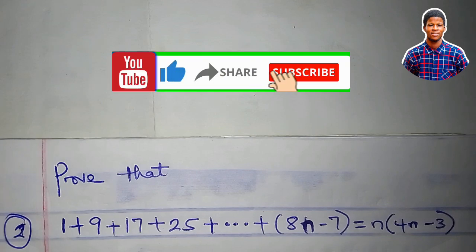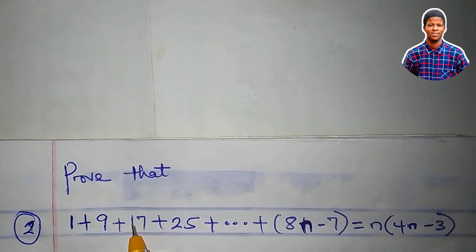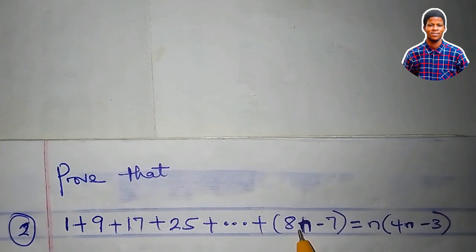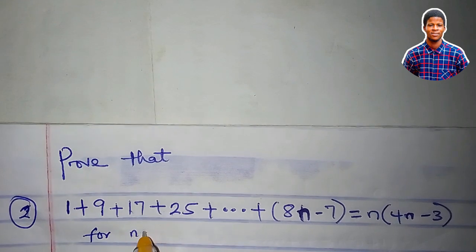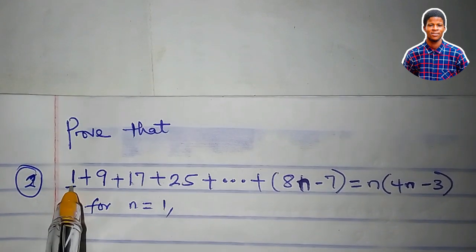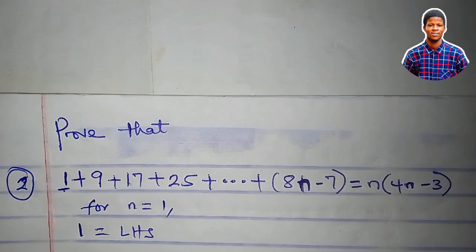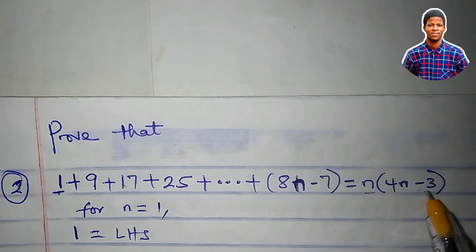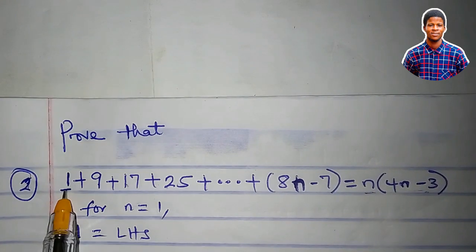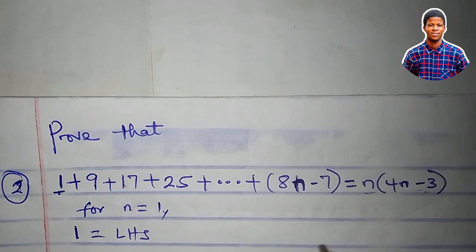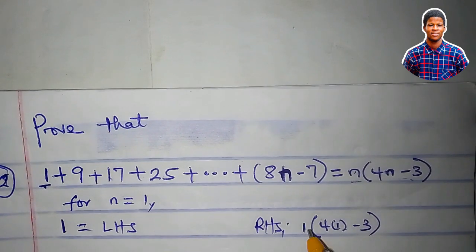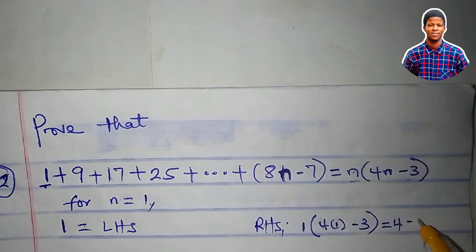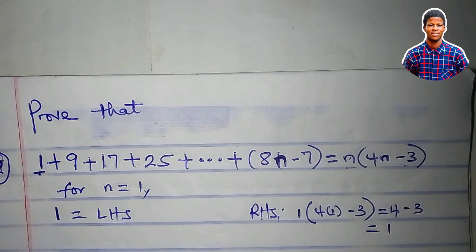Now I want to prove by mathematical induction that the sum 1 plus 9 plus 17 plus 25 up to the term 8n minus 7 is equal to n times 4n minus 3. We have to show that it is true for n equal to 1. At the left-hand side I have 1. Let me plug in the value of 1 into the right-hand side: 1 times 4 times 1 minus 3 equals 4 minus 3, which equals 1. So it is true for n equal to 1.